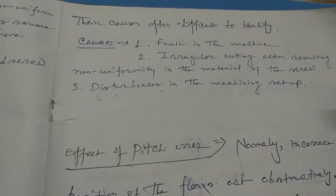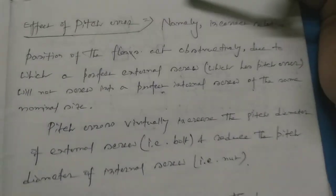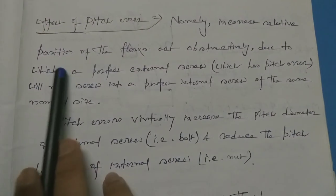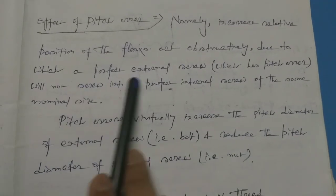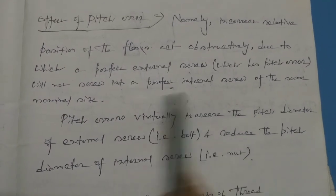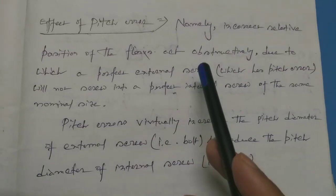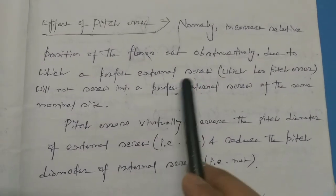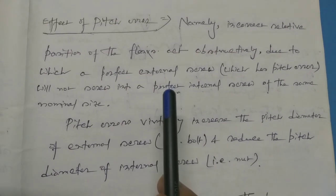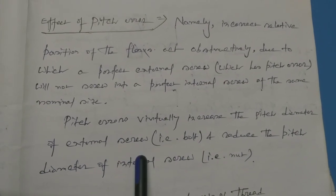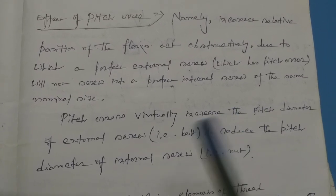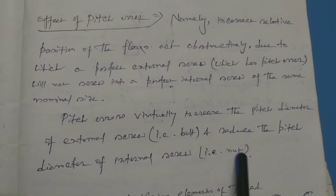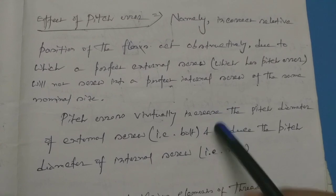This is very important for your exam. Regarding the effects of pitch errors: incorrect relative position of the flanks means that a perfect external screw which has a pitch error will not screw into a perfect internal screw of the same nominal size — there will be no perfect fit. Pitch errors virtually increase the pitch diameter of the external screw and reduce the pitch diameter of the internal screw.